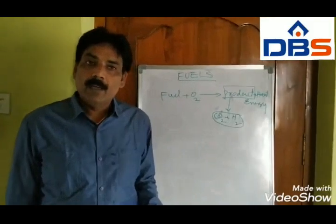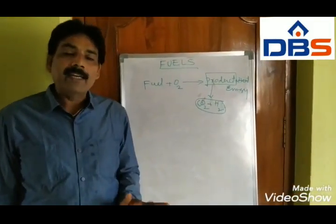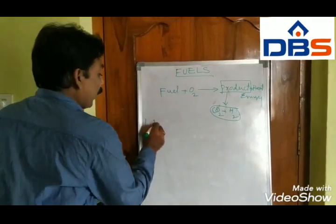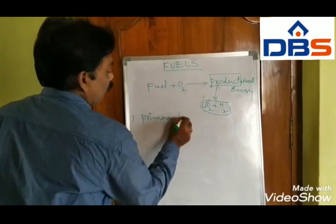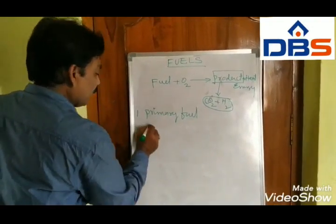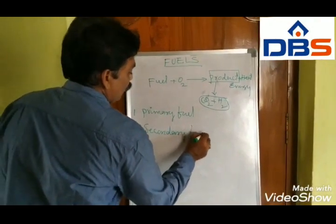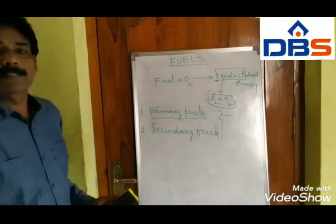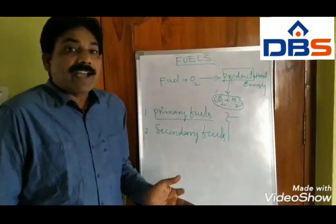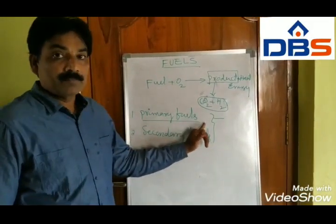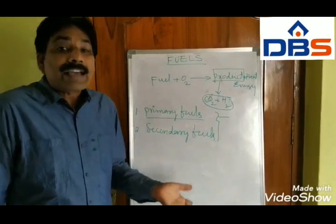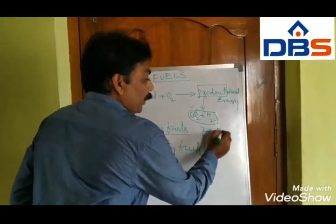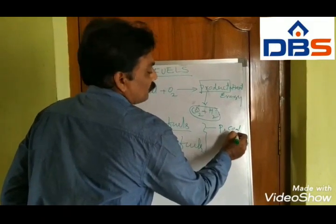Classification of fuels: fuels are classified into two types based on properties. One is primary fuel and the second one is secondary fuel. Primary fuels are fuels which occur in nature. Examples of primary fuels: petroleum, coal, coke, etc.